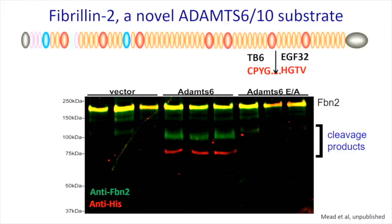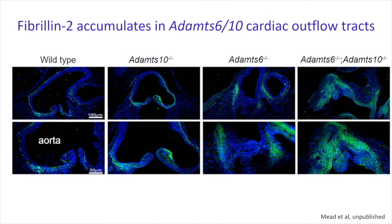Using proteomics approaches and biochemistry, we've recently identified a unique cleavage site in a matrix molecule called fibrillin-2, which forms macromolecular fibrils visible on electron microscopy. The active enzyme produces fragments of fibrillin-2, whereas a catalytically inactive mutant cannot. The homolog ADAMTS-10 is also capable of cleaving fibrillin-2. In-situ imaging shows accumulation of fibrillin-2 in green in ADAMTS-10 knockout cardiac outflow tract, somewhat more in the ADAMTS-6 knockout. The double knockout shows an additive increase in fibrillin-2, prompting us to ask how important this accumulation is to the phenotype.